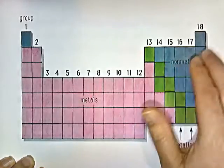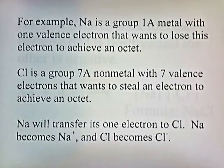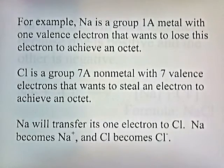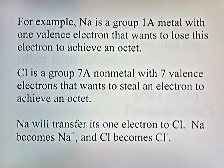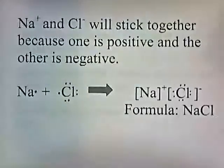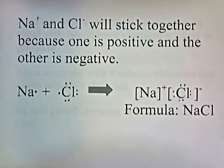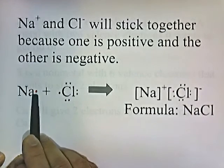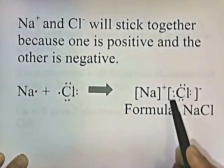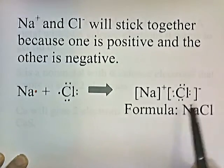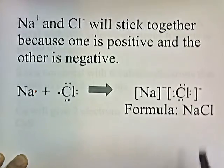For example, sodium is a group 1A metal with one valence electron that wants to lose this electron to achieve an octet. Chlorine is a group 7A non-metal with seven valence electrons that wants to steal an electron to achieve an octet. Sodium will transfer one electron to chlorine; sodium becomes Na+ and Cl becomes Cl−. Na+ and Cl− stick together, and the formula is NaCl.